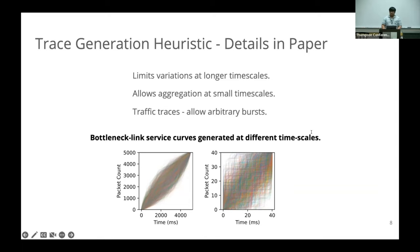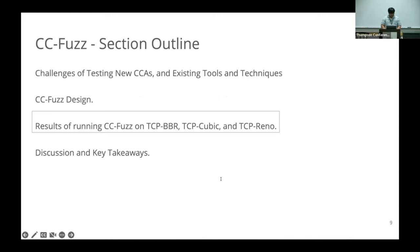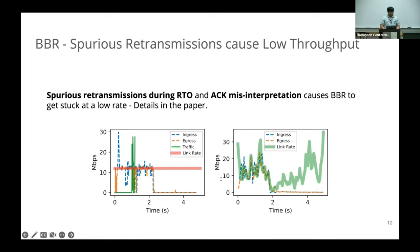Our trace generation heuristic limits the long-term variability in rate — over a five-second time scale there's a limited rate variation, but on a short time scale we allow arbitrary jitter. We found a bug in BBR in NS3: if there's an RTO, BBR can misinterpret ACKs for older transmissions as ACKs for spurious retransmissions, causing BBR to get stuck at very low throughput and never recover. We were able to trigger this using a cross-traffic trace with a burst causing losses and then a second loss after some time, triggering an RTO that causes BBR to get stuck after one second.